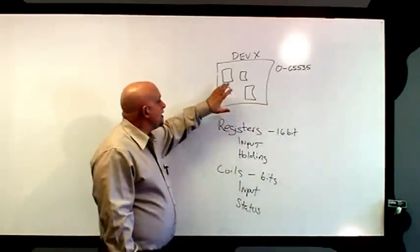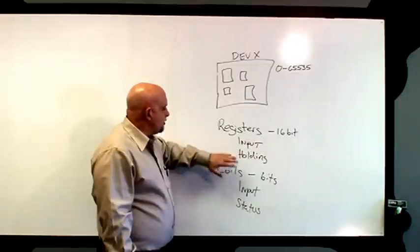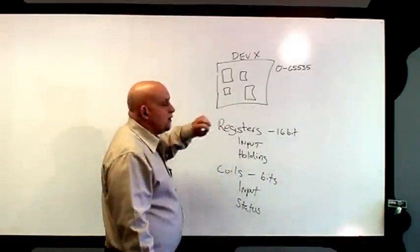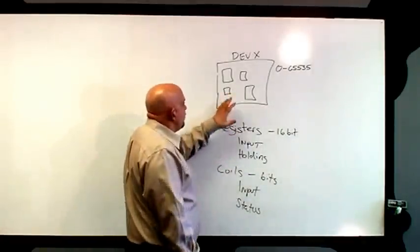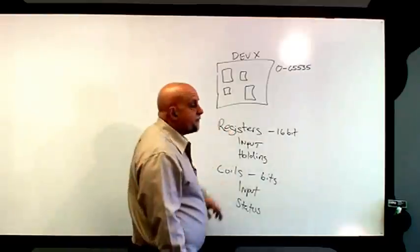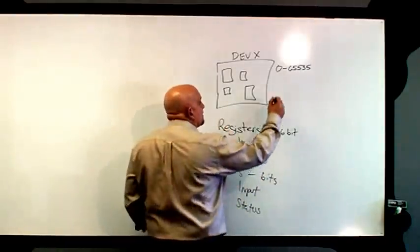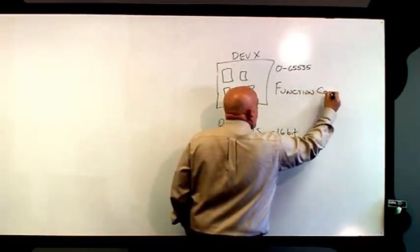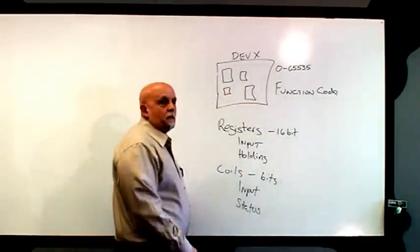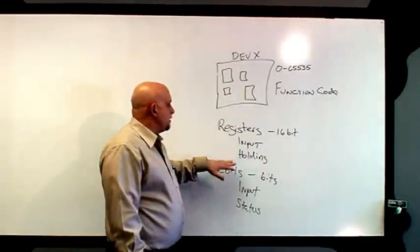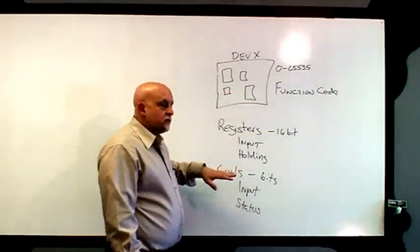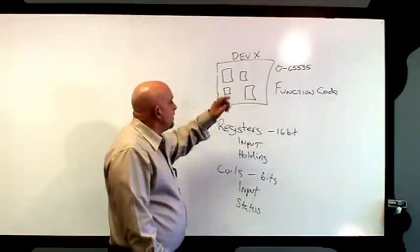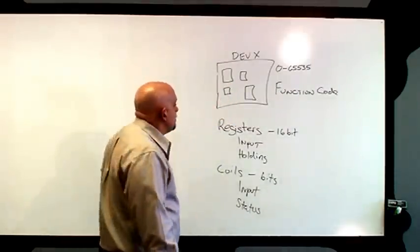So what they typically do is limit this — for example, we're going to have 10 holding registers and 16 input coils, and that's it. Once these data areas are defined, a Modbus master uses function codes to access them: read registers, read holding registers, read input registers, set a holding register, read input coils, and so on. We've talked about that before and won't review it today.